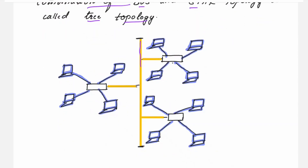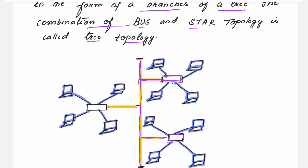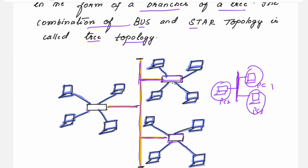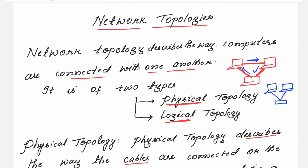In tree topology, there is one central cable — one main cable — to which star topologies are connected at different points. Instead of connecting individual PCs directly to the main cable as in bus topology, a complete star topology is connected to the central cable at each junction. That is what we call the tree topology. This covers all the network topologies in computer networks.